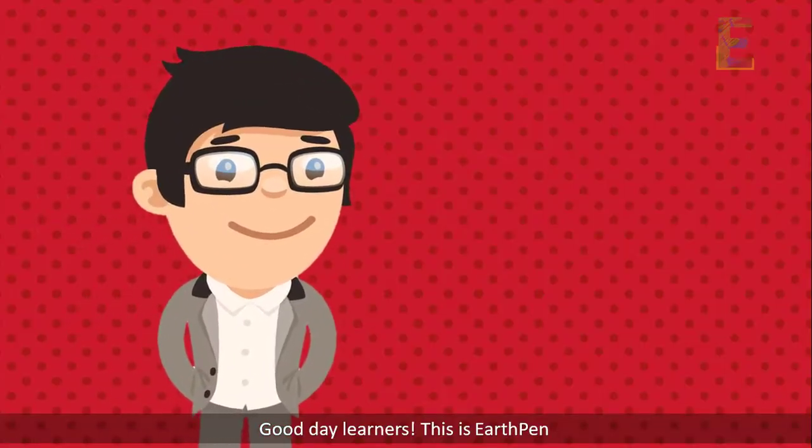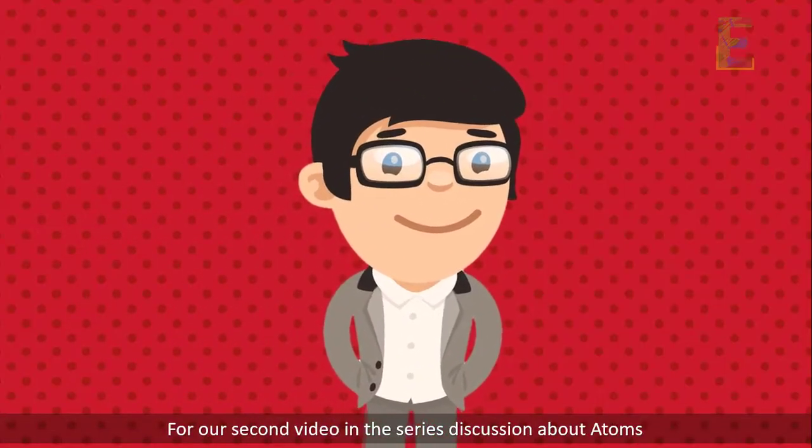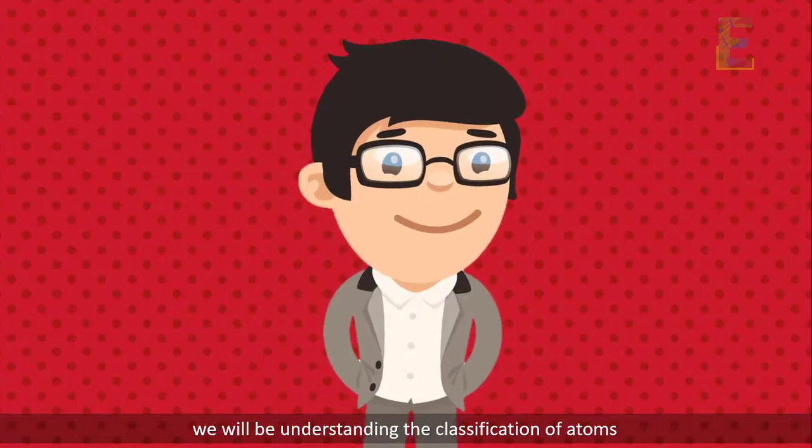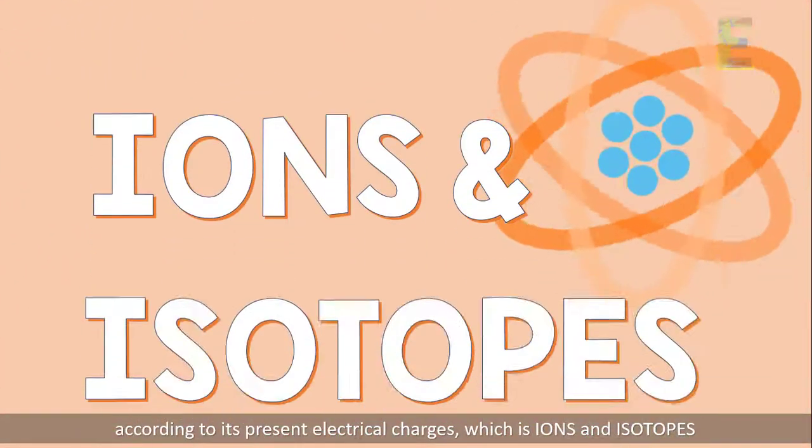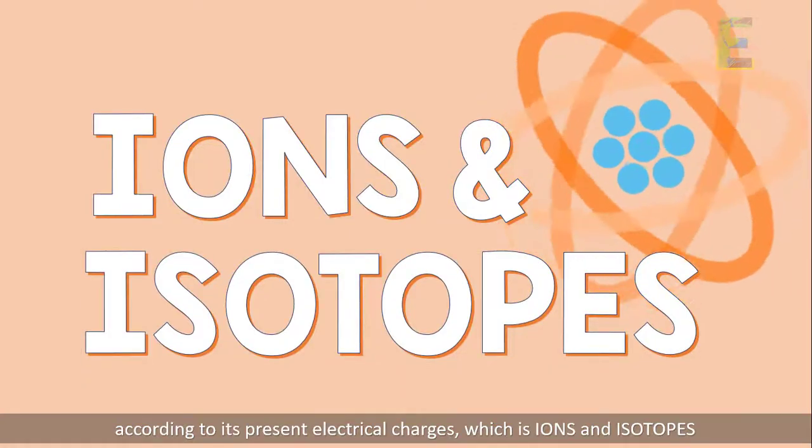Good day learners, this is Earth's Pen. For our second video in the series discussion about atoms, we will be understanding the classification of atoms according to its present electrical charges which is ions and isotopes.